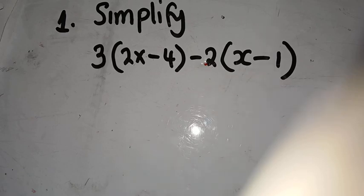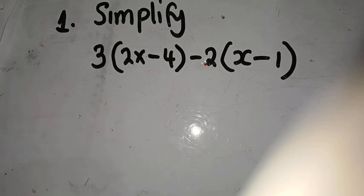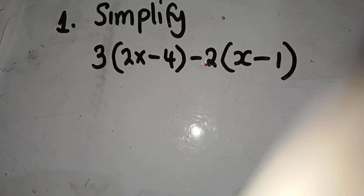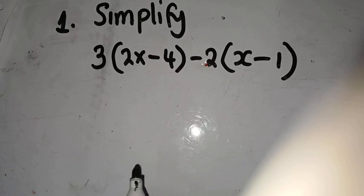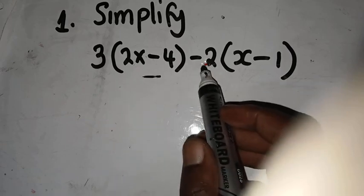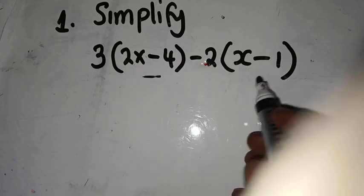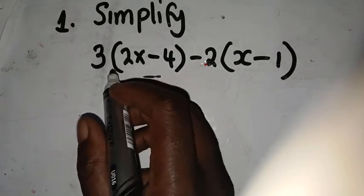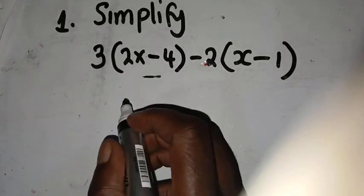What would be your answer? So what we're supposed to do first of all, ladies and gentlemen, is to get rid of the brackets. Each time we have brackets in the question, we need to get rid of them. In this question, we need to distribute the 3 on this side, then distribute the minus 2 into this one here.